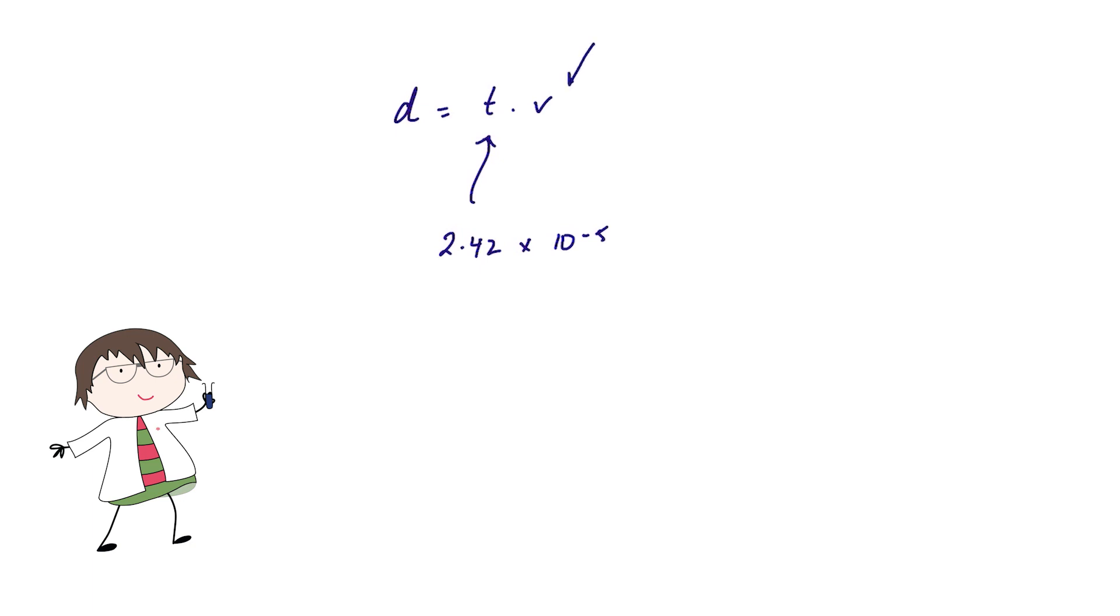And we can calculate a value for the velocity. The second equation, kinetic energy equals half the mass multiplied by the square of the velocity, can also be rearranged quite simply to give us velocity equals the square root of twice the kinetic energy divided by m, the mass.